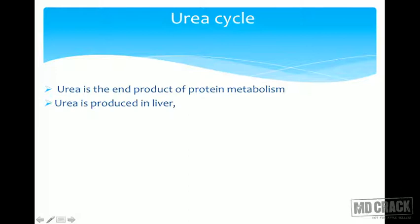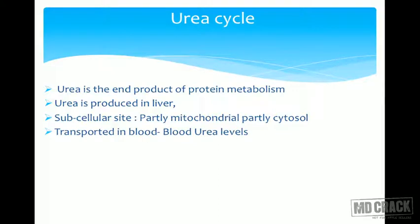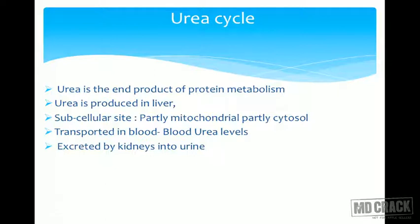Once urea is formed, it is transported out of liver cells, contributes to blood urea levels, and is excreted by the kidneys. Most problems with elevated urea levels are due to kidney problems rather than liver problems — blood urea estimation is part of the kidney function test, not the liver function test. Urea is the major organic compound present in urine.